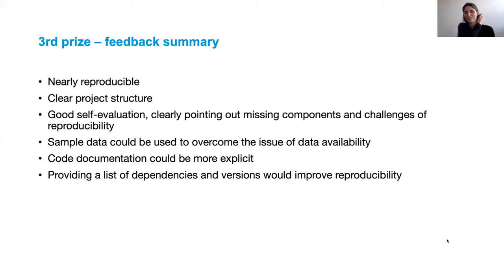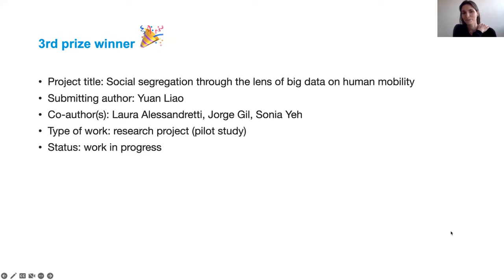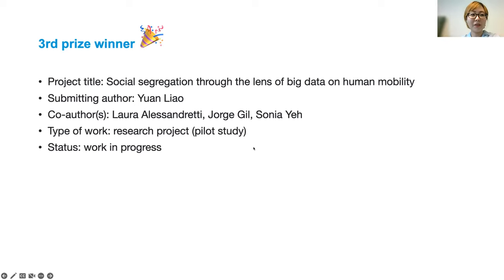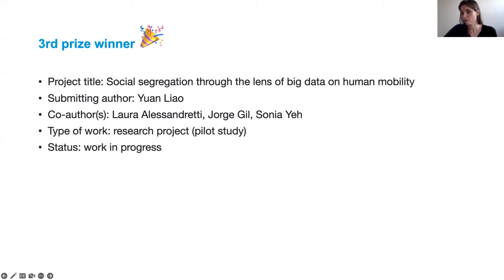The third prize goes to the project titled 'Social Segregation Through the Lens of Big Data on Human Mobility,' submitted by Joan Leo. Congratulations on a great work. The biggest point of feedback is the lack of a dataset — the data cannot be shared openly, but what would really help towards reproducibility is some sort of sample or synthetic dataset to feed the whole workflow and allow others to see how the code works. That would be the next biggest point of improvement going forwards.